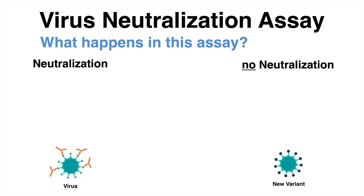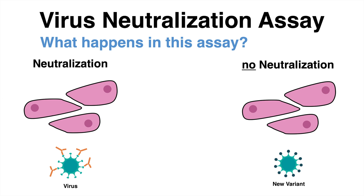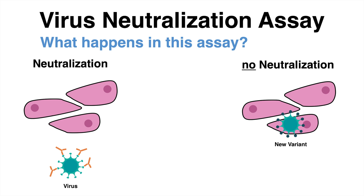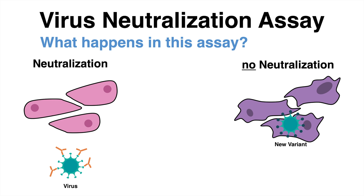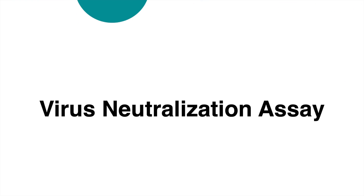Now when the cells are added, the neutralized virus cannot infect the cell culture. In our example, the new variant, which was not neutralized by antibodies, can infect the cells, and cytopathic effects can be detected by microscopy. This example shows that mutations within the surface protein of the virus may drastically reduce or even prevent an antibody response.